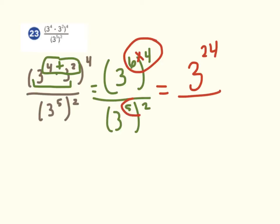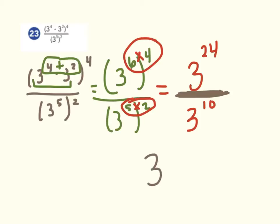The power rule can also be used in the denominator: keep the base, multiply the exponents. Finally, we have a division problem, so we can use the quotient rule. The quotient rule says we keep the base and subtract the exponents: 24 minus 10, and the final answer is 3 to the 14th power.